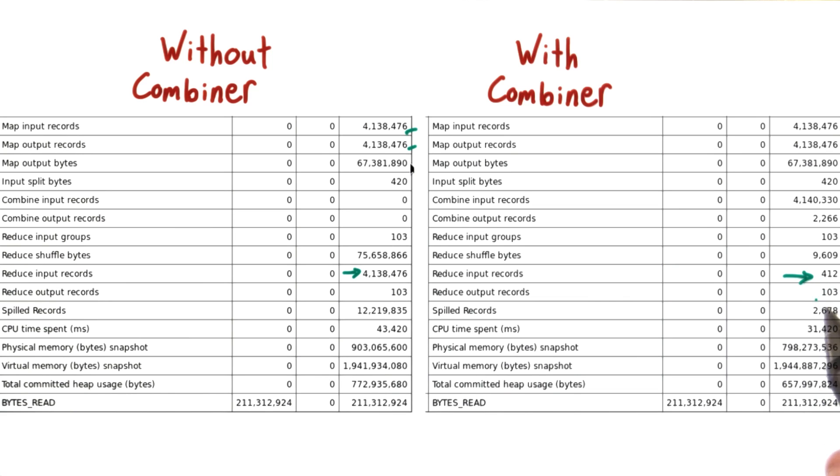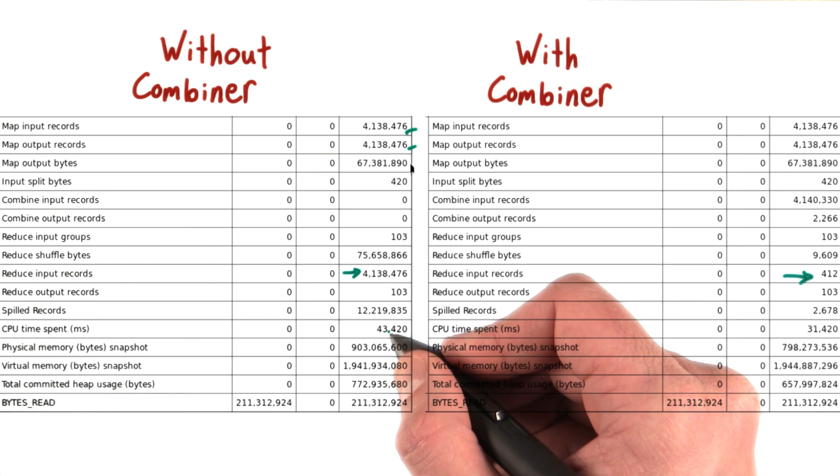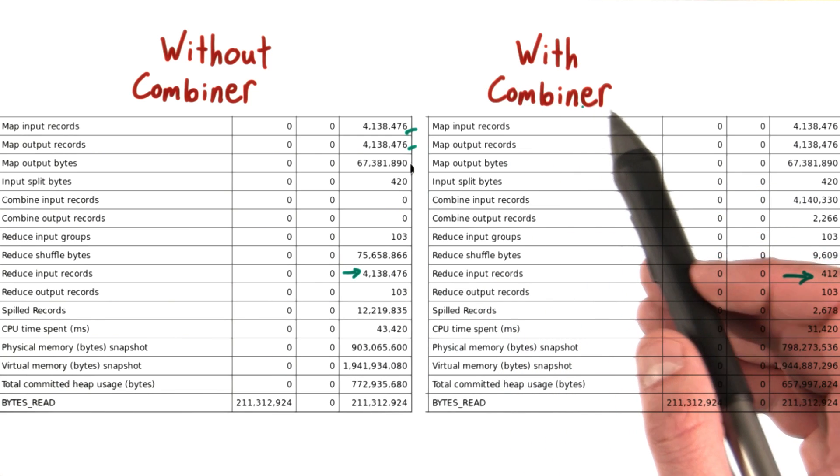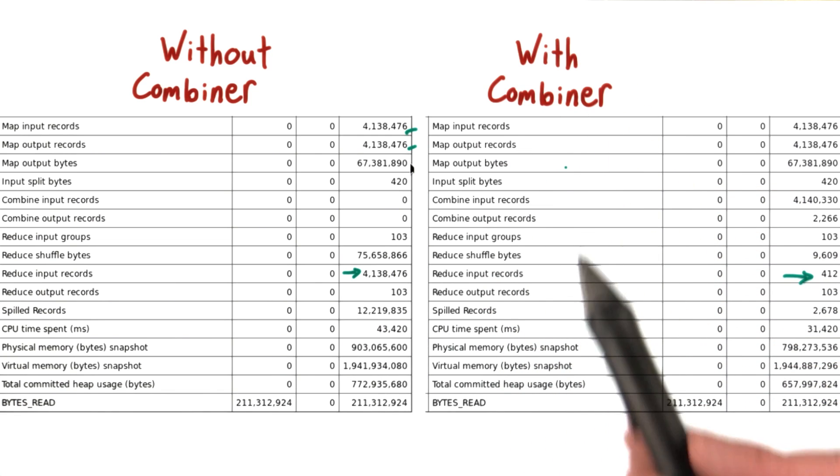In fact, the reducers had to shuffle far fewer bytes. And for time spent, with the combiner this job took 31 seconds to run, versus without where it took 43. That's a significant difference. So you can really use combiners to improve the efficiency of your MapReduce jobs. And we're going to try that next.